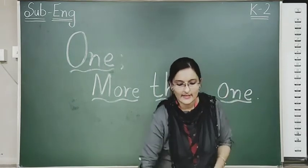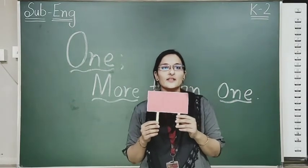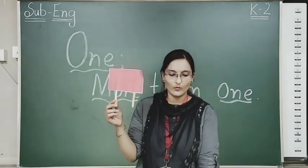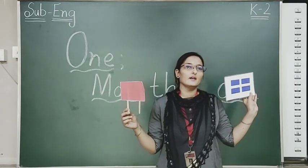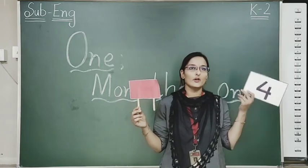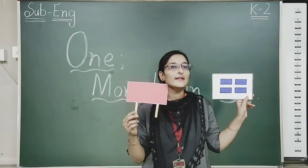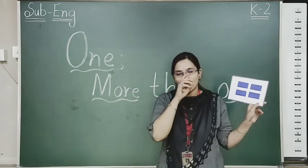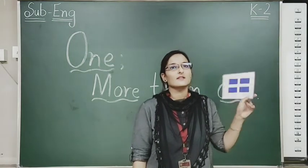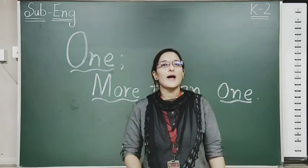Moving to our next example. What is this? Rectangle. Only one rectangle is there in this hand. Moving to this side, how many rectangles are there? Count it. One, two, three, four — four. So in this spelling, what we will add? S. R-E-C-T-A-N-G-L-E-S. Got it? What we have to do? We have to add S in the spelling.